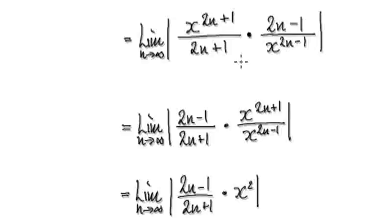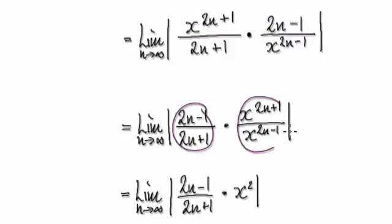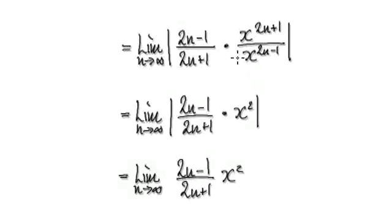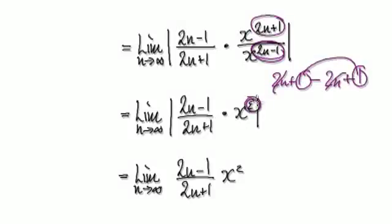So tidy this up. You've got this thing and this thing here. Group them together, then move this across here, and move this thing across here. So you group all the n's together and you group all the x's together. Now tidy this up. If you look at this, you simply get this. Take away this — so 2n plus 1 take away this thing here, which would be minus 2n, which becomes a plus 1. So these two cancel out. 1 plus 1 is 2, giving you this 2 here.